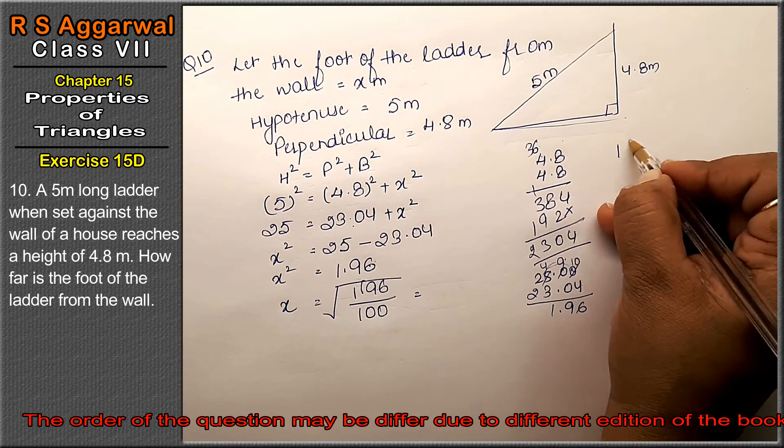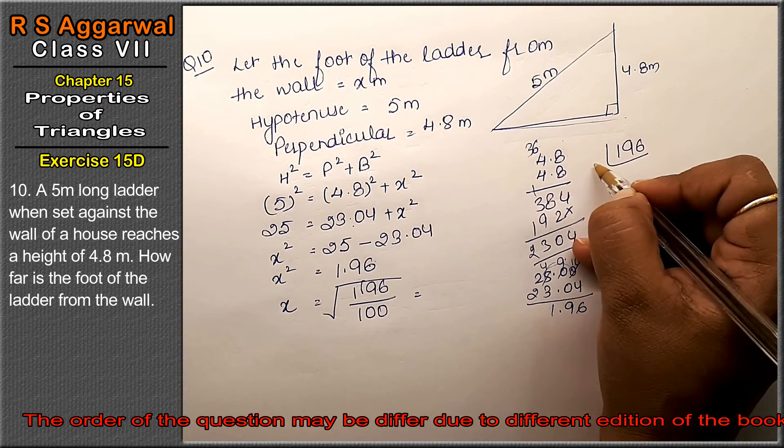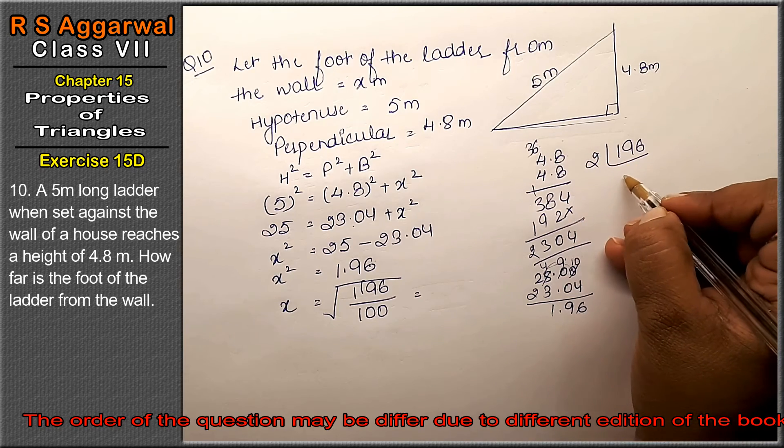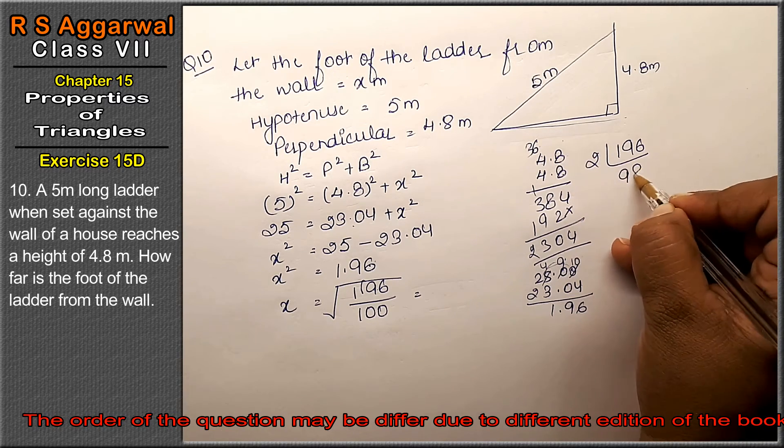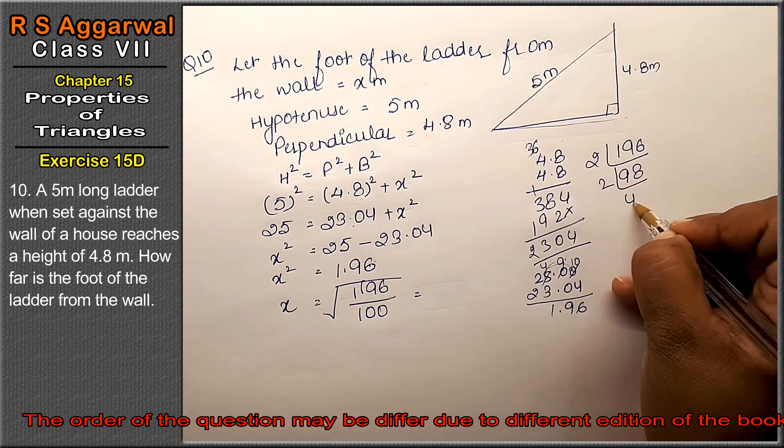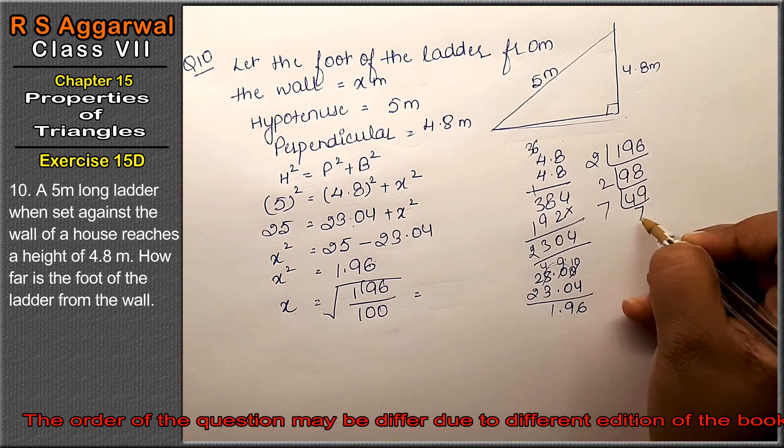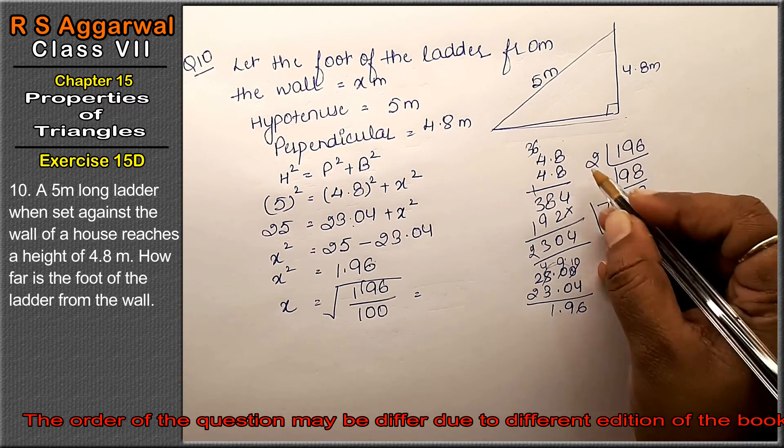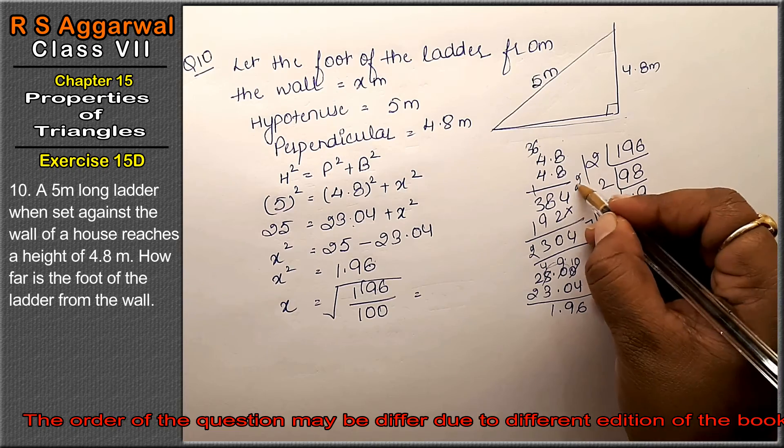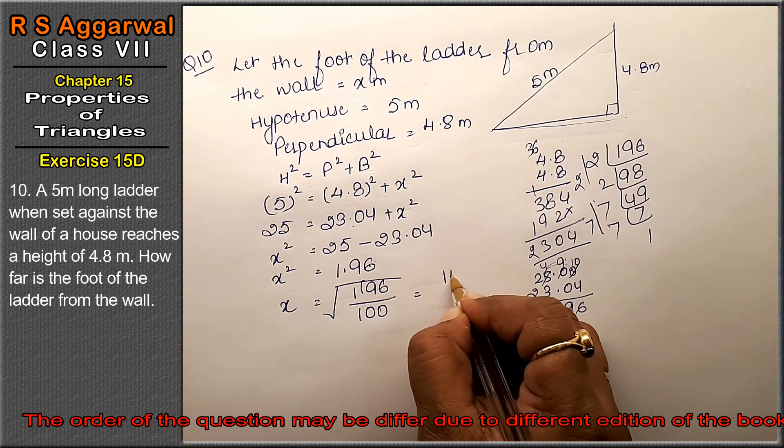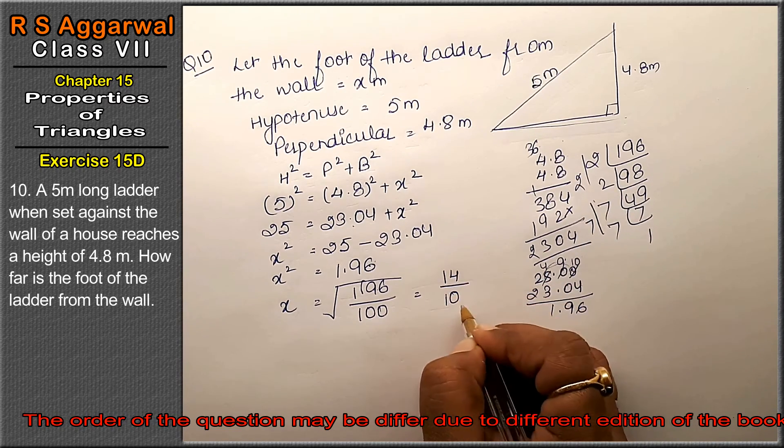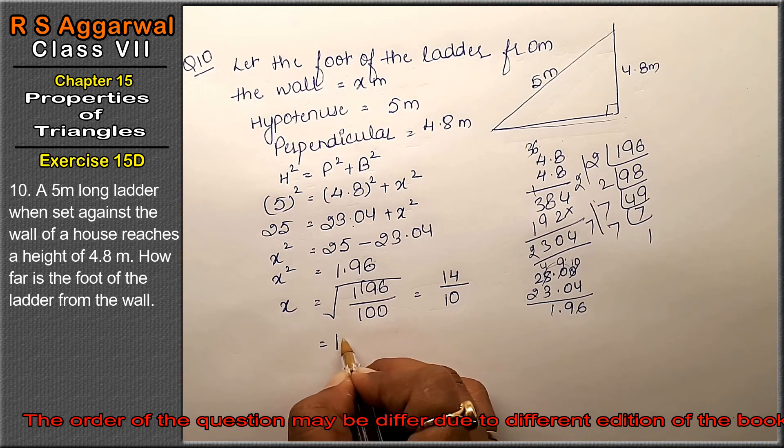Square root of 196: 2 times 2 is 4, 7 times 7 is 49, making pairs gives 14. Square root of 100 is 10. So the answer is 1.4.